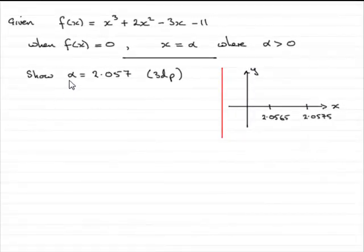Now in the last part of this question, we've got to show that the positive root x equals alpha is equal to 2.057 to three decimal places.